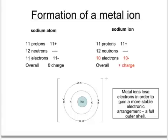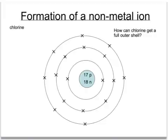Metal ions generally will lose electrons in order to form this more stable electronic arrangement — a full outer shell. Chlorine is a non-metal found on the right-hand side of the table in group seven, because it's got seven outer electrons. So how would chlorine get a full outer shell? Well, it could lose all of those seven electrons, or, more easily, it would just gain one extra one to give it a full shell of eight — and in fact, that's what it does.